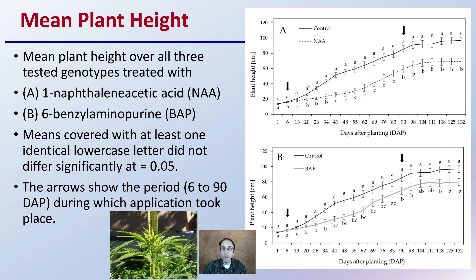Overall, days after planting, plant height is going to be taller in the control — the non-treated plant — compared to the one that had the auxin family hormone applied. The control also ended up with a taller mean plant height compared to the one that had the cytokinin applied. These are all significantly different, and we can see that throughout the growth cycle.